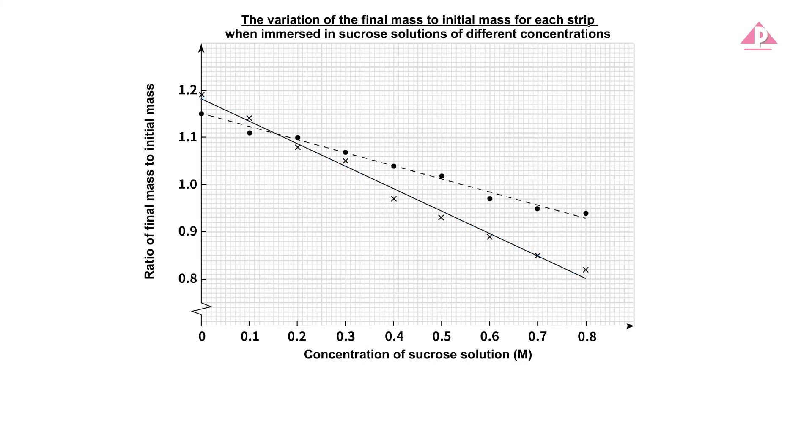If you plot more than one set of data on the same graph, you should use different symbols and line styles to plot and join points belonging to different sets of data. And last but not least, remember to include a key.